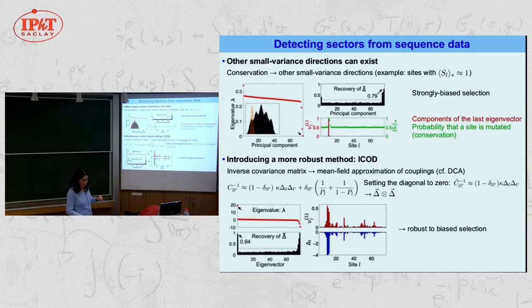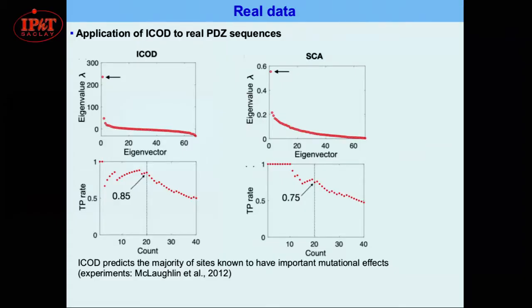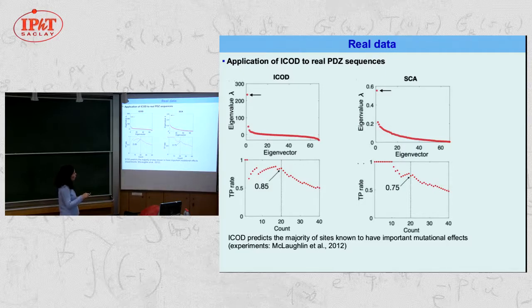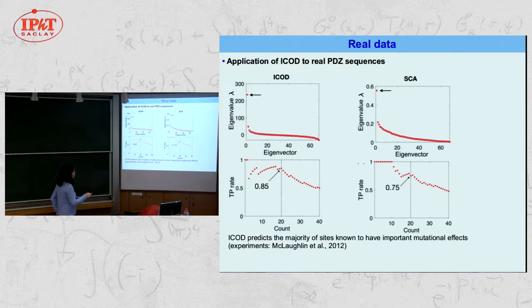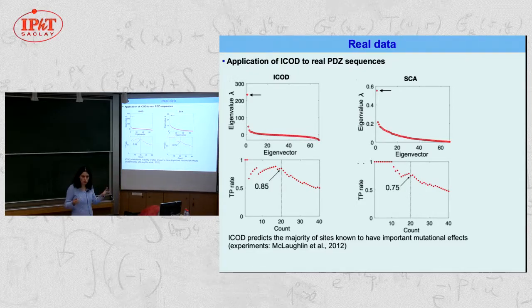We tested robustness to different types of selection and have started applying this to real PDZ sequence data. We compared our method's performance to that introduced by the Ranganathan group for predicting sites with important mutational effects confirmed by actual experiments. The performance is similar: at 20 sites our method performs better, but initially the other method performs better. This result is encouraging and suggests we should examine more data.